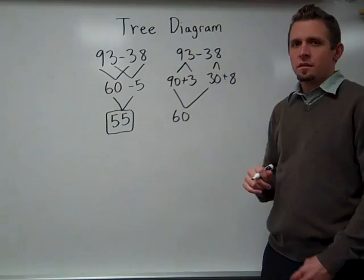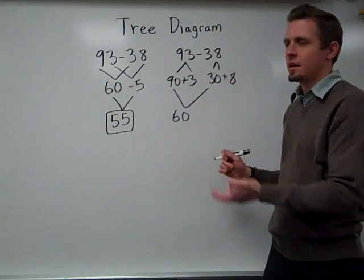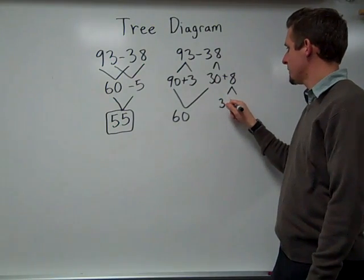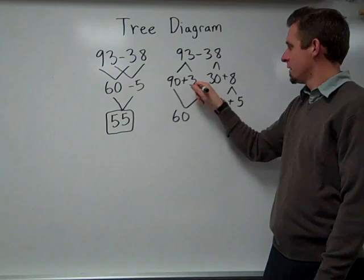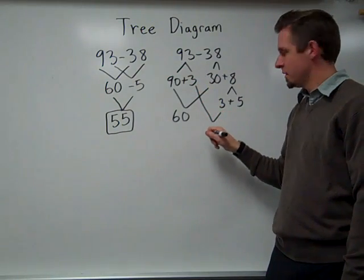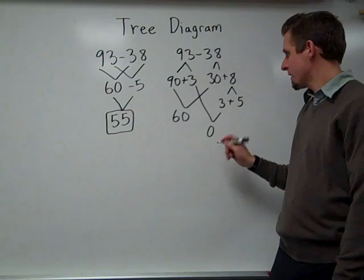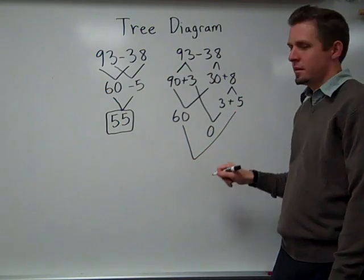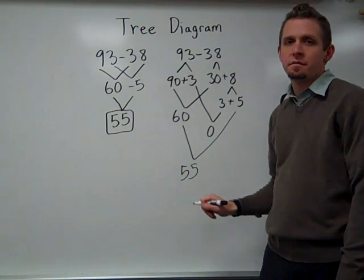Then I would subtract the 30 from the 90 which gives me 60. But then if I don't want to go into the negatives again and I want to avoid using negative numbers, I can decompose the 8 into a 3 plus a 5. Then I subtract the 3 from the other 3 which gives me 0. I still have 5 more to subtract. So then I need to subtract 60 take away the 5 which gives me the answer of 55.